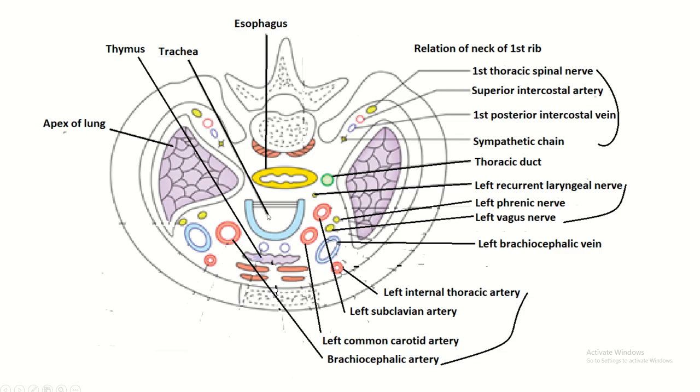The structures passed through the thoracic inlet. Viscera, from posterior to anterior: three viscera - esophagus, trachea, thymus - and laterally the apex of the lungs.